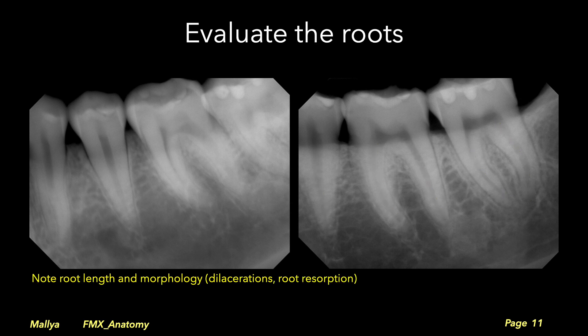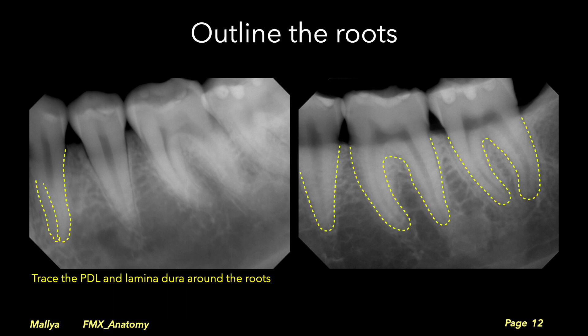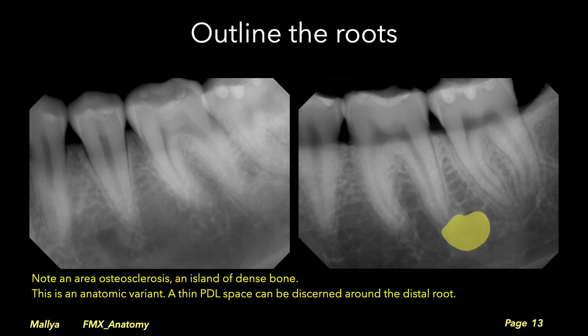Evaluate the roots, assessing the root length, the crown-root ratio, and noting any dilacerations in the root. Note that the region of the furcation is better visualized on mandibular molars than it is on maxillary molars. Trace the laminar dura and periodontal ligament space along the length of the roots.